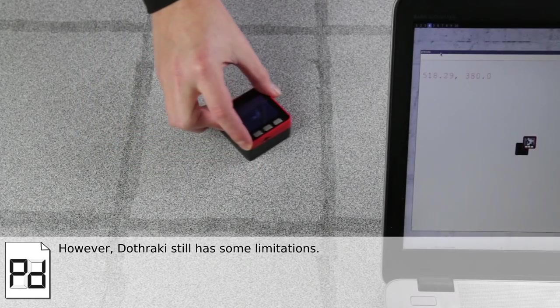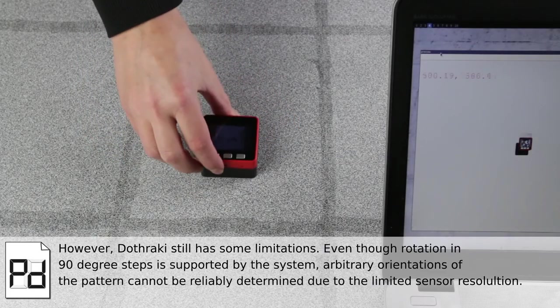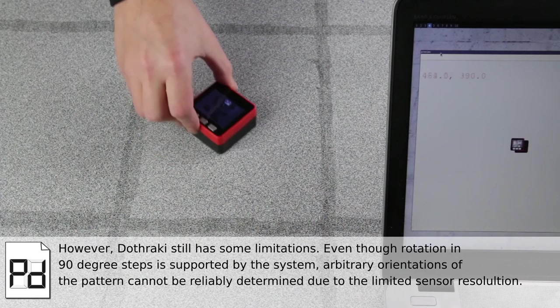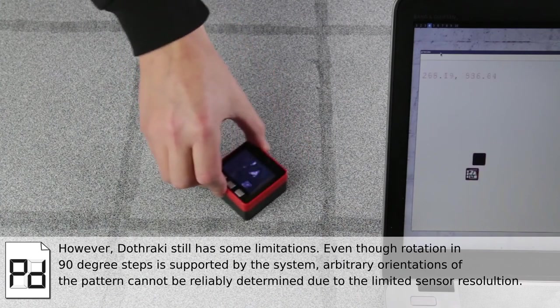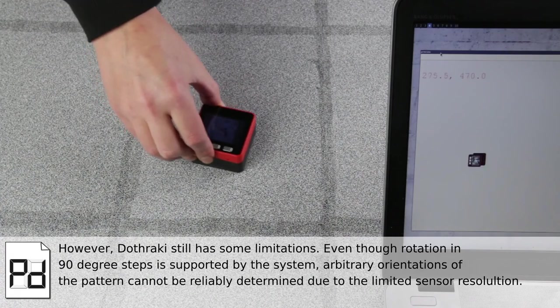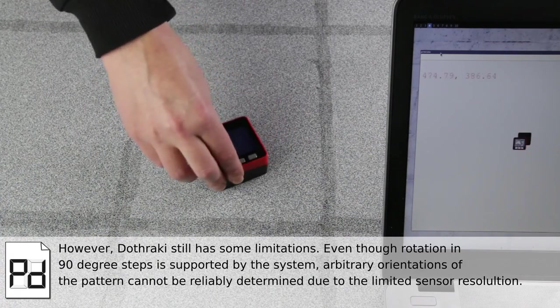However, DOTRAKI still has some limitations. Even though rotation in 90 degree steps is supported by the system, arbitrary orientations of the pattern cannot be reliably determined due to the limited sensor resolution.